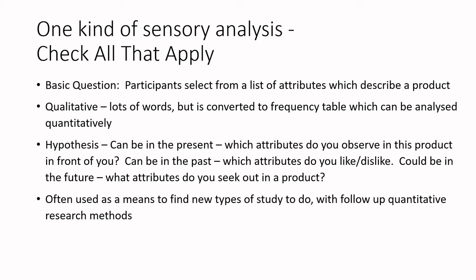Your hypothesis can be in the present — you put a food product or beverage in front of someone and ask what attributes you observe. It could be in the past — asking what attributes are important in, say, strawberry jam without having the product in front of you. Doing it without the product present can be misleading, because consumers often say they want a certain attribute but don't actually like it. So you often need to link CATA to another type of preference or hedonic testing.